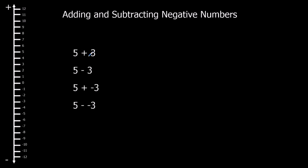So here I've got 5 plus 3, and I'm just going to show you this on the number line. 5 is our starting point — the first number is where we start. So we'll start at 5, and plus means we're going to go up. So plus, we're going to go up 3 spaces: 1, 2, 3 — and that gets to 8. That's how we use a number line to add.